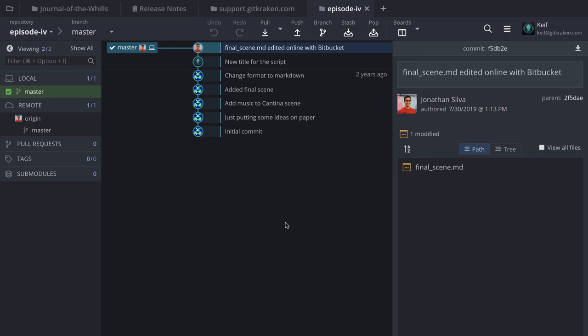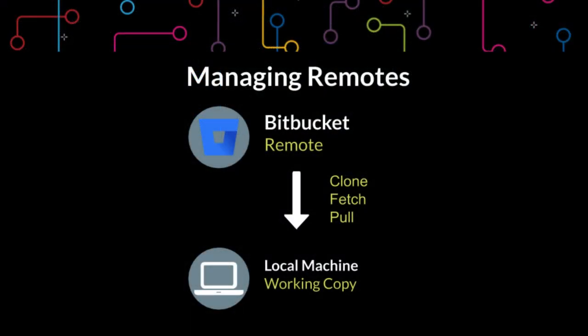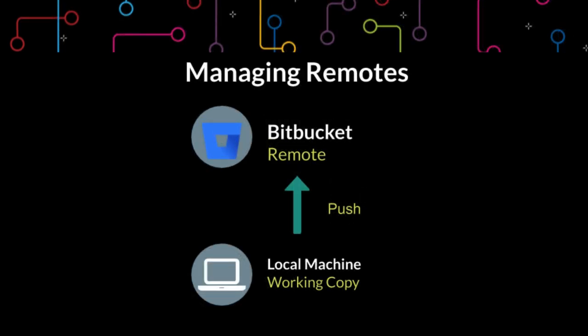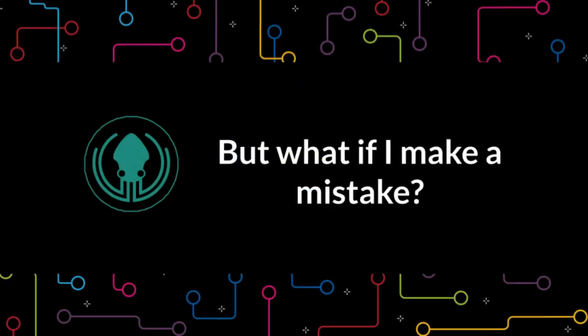Quick recap: GitKraken makes it pretty easy to clone, fetch, or pull from your Bitbucket remote onto your local machine. Similarly, you can make changes to your project locally and push those changes up to Bitbucket for others to see. And just like we went through together, if you push a change to Bitbucket, other team members using GitKraken can perform a fetch, see the pending changes, and pull them down to their clone of the repository.